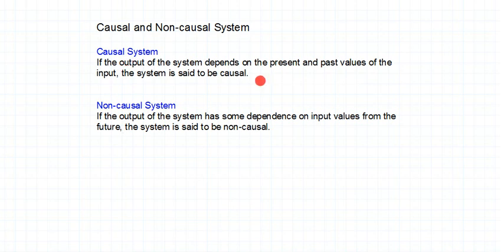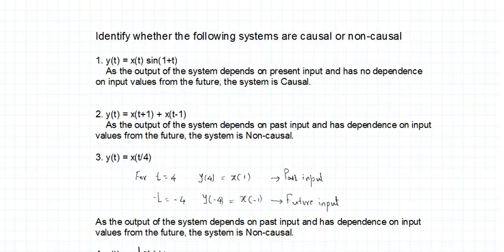A causal system is one where the output has only present and past values. A non-causal system is one which has some dependence on the future values of the input. Let us try to understand this with certain examples. The following systems — determine if they are causal or non-causal. Look at the first example: y(t) = x(t) · sin(1 + t).